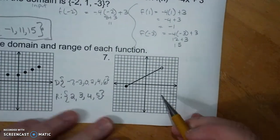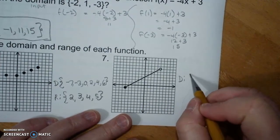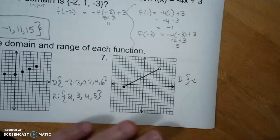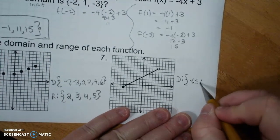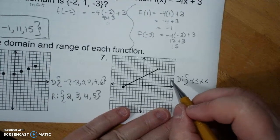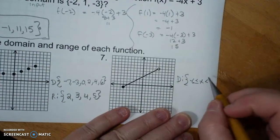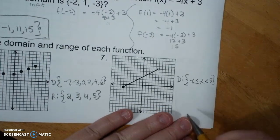Domain from here. Domain is from left to right, which is negative 6, closed dot, to x, open dot, 5. And yes, they have to be facing that way.